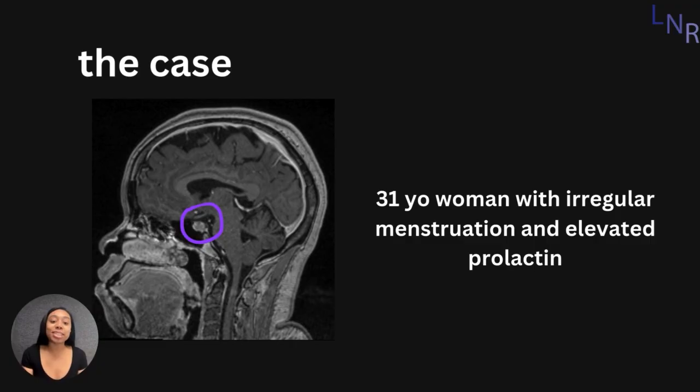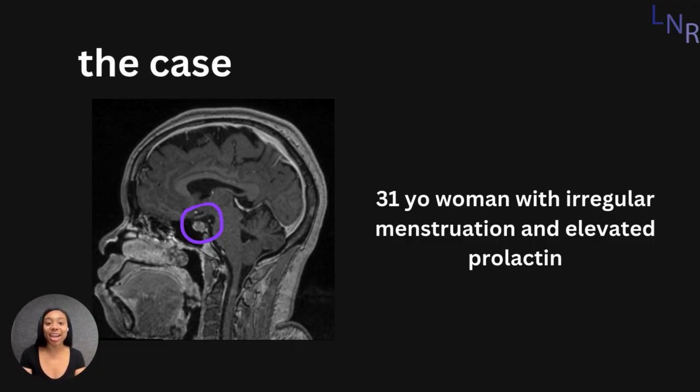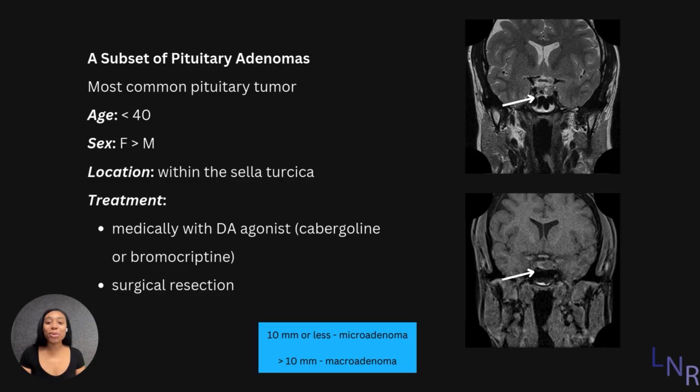Today, we are presented with a 31-year-old female with irregular menstruation and elevated prolactin. If you guessed a prolactinoma, you'd be correct.